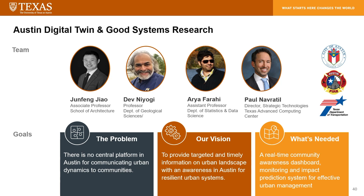Here are our team leaderships and we also have a solid partnership with the City of Austin, Austin Fire Department, and Texas DOT. Under the big Good Systems umbrella, we mainly focus on how AI could be used in the context of urban environments, and we are thinking about how to provide targeted and timely information for cities through a real-time community awareness platform for monitoring and communicating urban dynamics to communities.